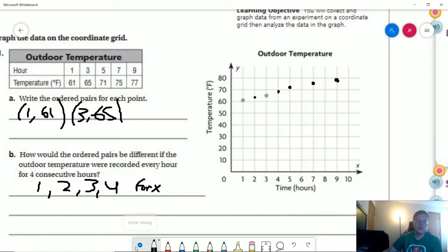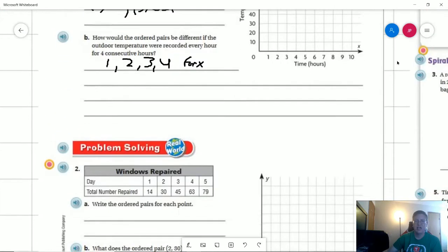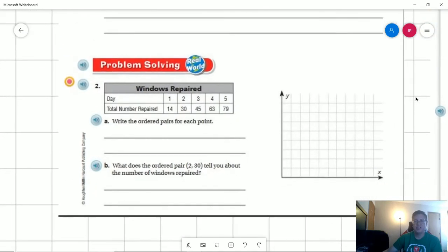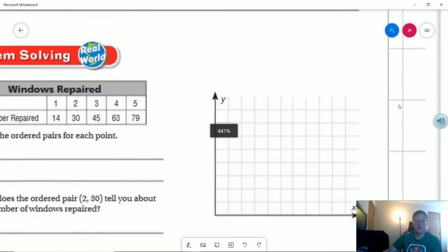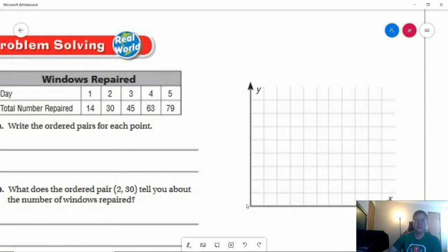So that's about the best way that I could explain it in a way that might make sense for you guys. So number two, let's go ahead and look at our points. We want to write the ordered pairs.